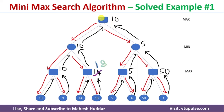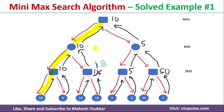This is how we expand the entire tree. Once the full tree is traversed, the value of the root node is 10. To find the optimal path, we trace the nodes where the value 10 is assigned at each level. Following those nodes from the root down to the leaf gives us the most convenient path from Max's point of view. This is how the minimax search algorithm works, explained with a simple solved example.